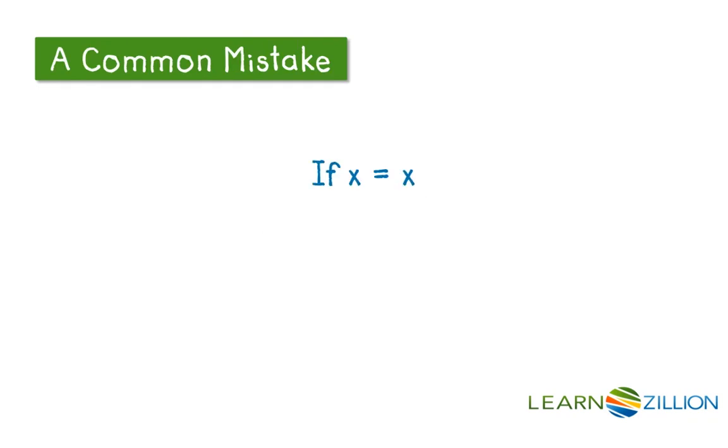Sometimes we forget that because we have an unknown variable, we can still apply those same rules to x. For instance, we know that the multiplicative property of equality is still present, even if we don't know what that value is. So we know if x equals x, then 2x still equals 2x, because we've multiplied both sides of that equality symbol by the same number, therefore maintaining equivalency.